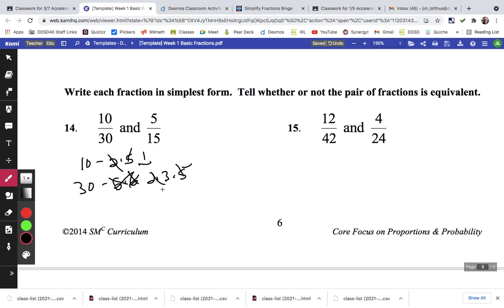So 10 thirtieths is 1 third. And 5 fifteenths. That's a 5. That's a 3 times 5. The 5s cancel out. There's a 1 there. So they're equivalent. So yes, they are equivalent.